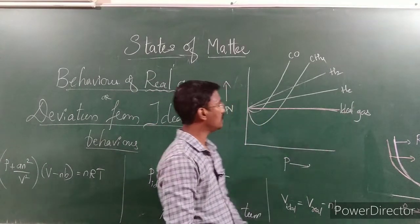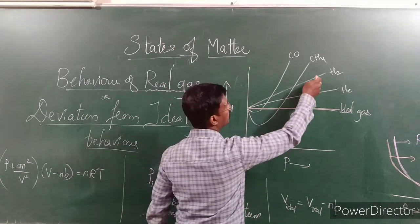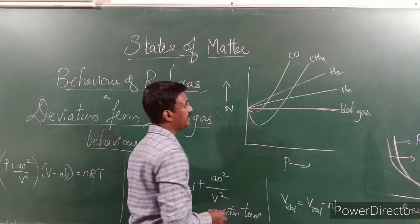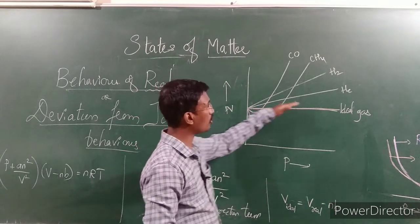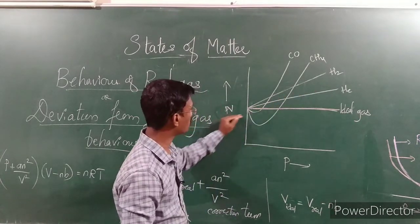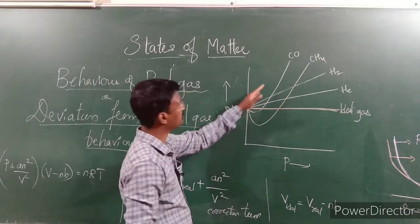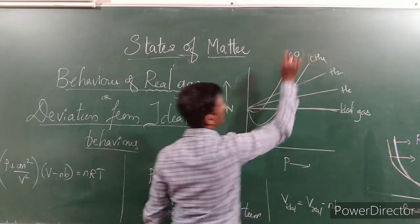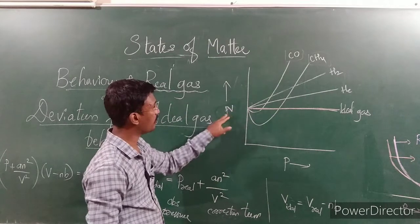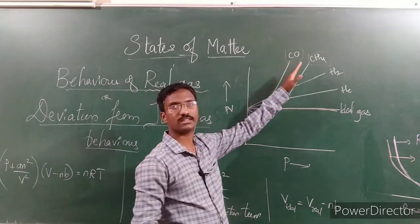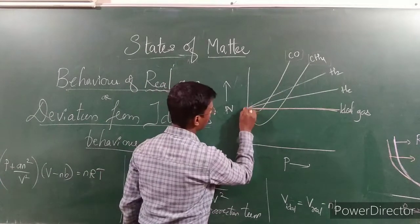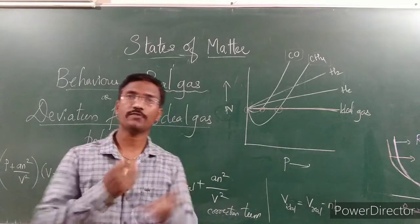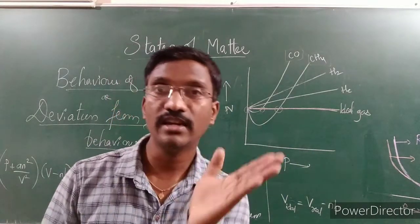Some gases like helium, hydrogen, methane, and carbon monoxide are just above the ideal gas line — their PV product is slightly higher. Whereas methane and carbon dioxide initially show a decreasing PV value, and then it increases again. At some particular pressure they obey ideal behavior, but soon after they deviate.